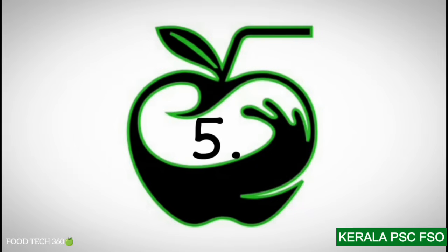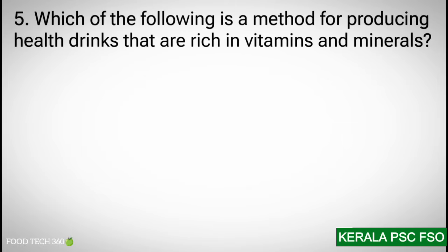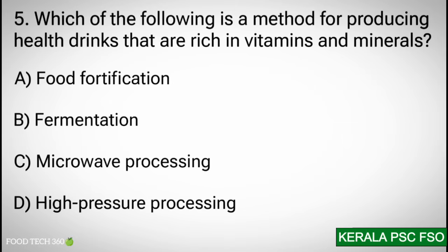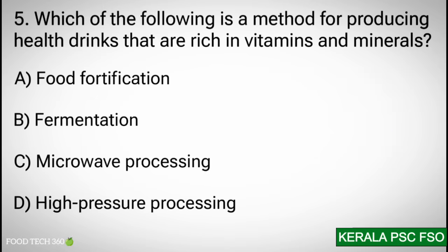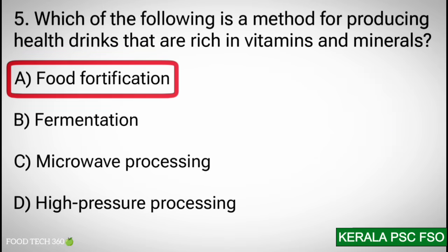Question 5: Which of the following methods is used to produce health drinks that are rich in vitamins and minerals? Options: a) food fortification, b) fermentation, c) microwave processing, d) high pressure processing. Correct answer: a) food fortification.